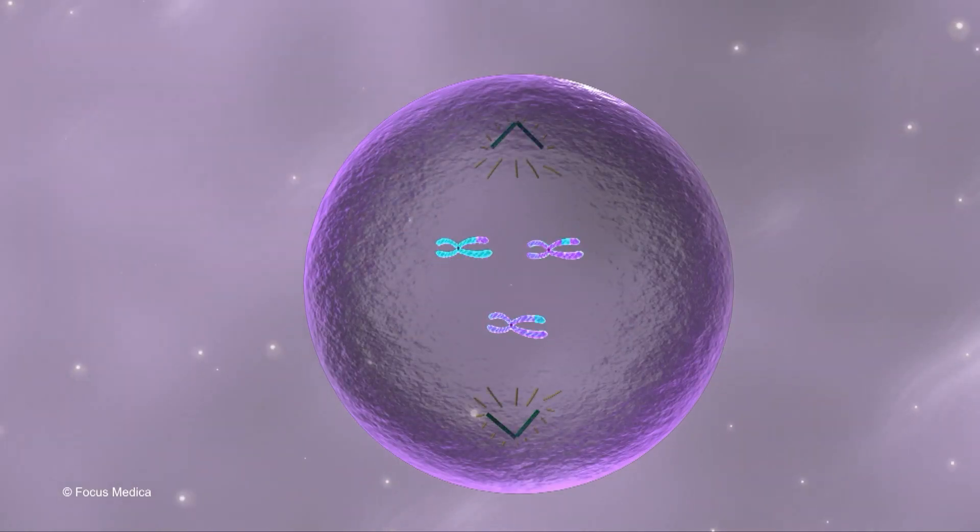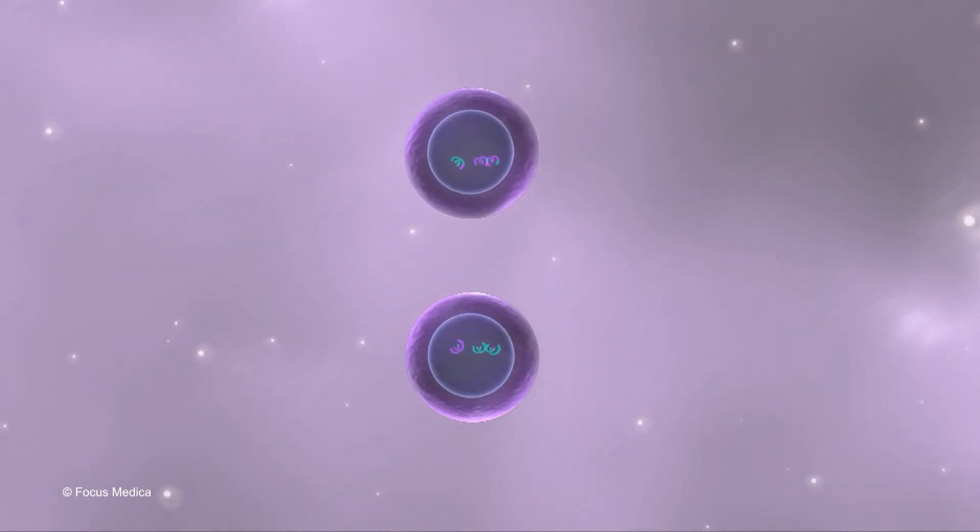Meiosis. Meiosis is a type of cell division that results in daughter cells, each with half the number of chromosomes.